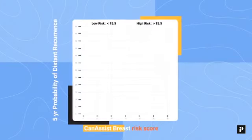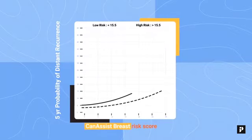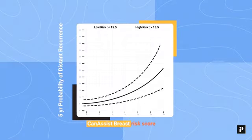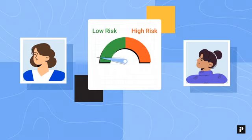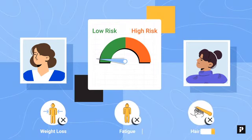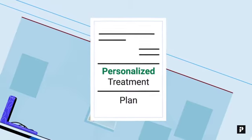The Can-Assist breast score determines the patient's risk of breast cancer recurrence over five years, allowing patients who are classified as low risk for cancer recurrence to avoid chemotherapy and its side effects.